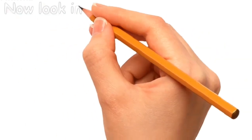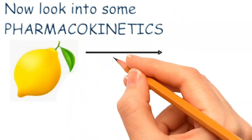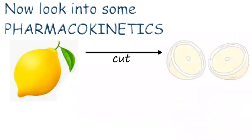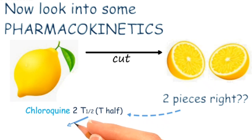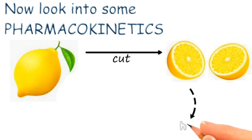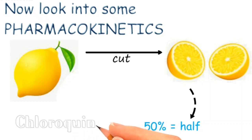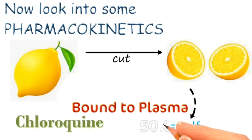Moving into the pharmacokinetics of chloroquine, we shall now cut the lemon into two pieces. Remember chloroquine has two half-lives: an initial half-life of three to ten days and a terminal half-life of one to two months. Since a half is equal to fifty percent, remember chloroquine is fifty percent bound to plasma proteins.